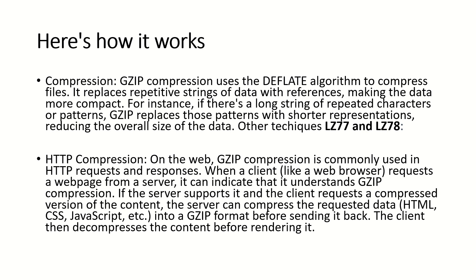On the web, GZIP compression is commonly used in HTTP requests and responses. When a client like a browser requests a webpage from the server, it can indicate that it understands GZIP compression. If the server supports it, it can compress the requested data — HTML, CSS, JavaScript, or any data — into GZIP format before sending it back. The client then decompresses the content before rendering it. The client sends an indication in the header requesting data in GZIP format, the server compresses and sends it, and the client decompresses it using GZIP decompression.